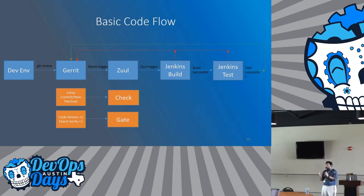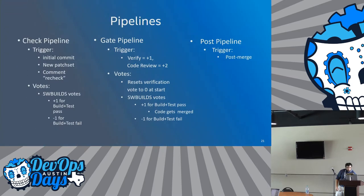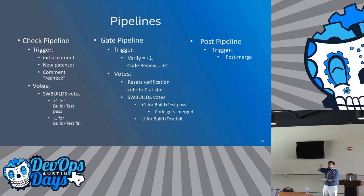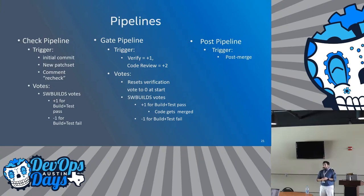The two pipelines Zuul provides are the check and the gate. The check pipeline runs as soon as a developer submits code — it's a bunch of quick tests, maybe just the build of the individual repo or the entire simulator or library stack. You may have some initial tests to run in check. This usually happens before a peer even gets to review the code since it triggers immediately, so nobody has to review code that already has verification issues.